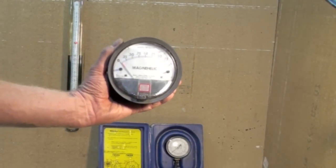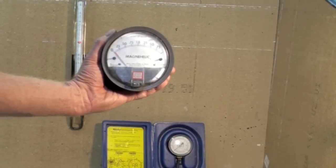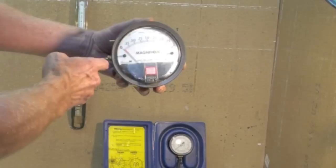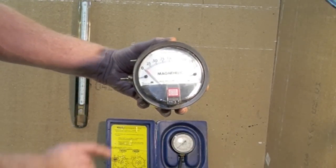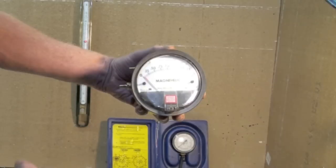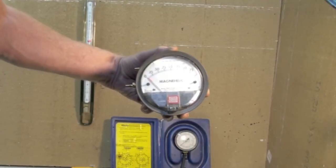Here's the fairly standard magna helic. The magna helic is sort of a clockwork type gauge. It has taps on either side here, one is low and one is high. This one reads from zero to two inches of water column.